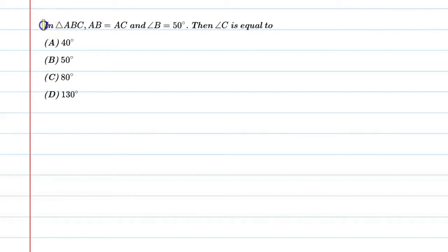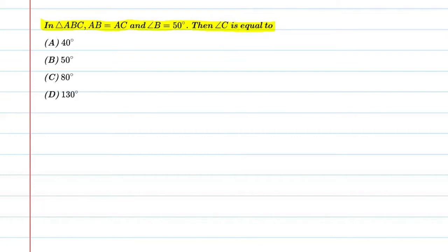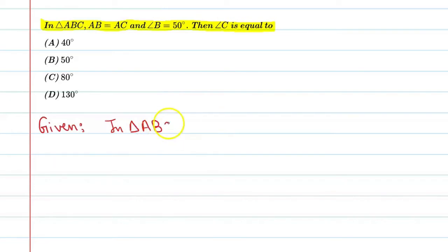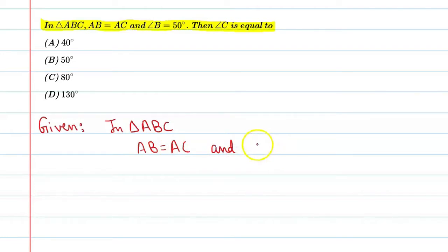Hello students, let's solve this question. In triangle ABC, AB is equal to AC and angle B is equal to 50 degrees. We need to find angle C.